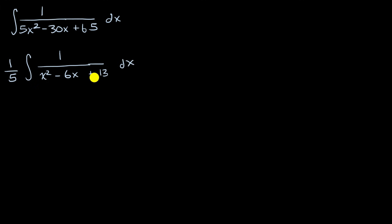I'm going to complete the square, so this is equal to one-fifth times the integral of one over x squared minus six x plus 13 dx. Let me write this plus 13 out here. What could I add, and then I'm going to have to subtract if I don't want to change the value of the denominator, in order to make this part a perfect square?